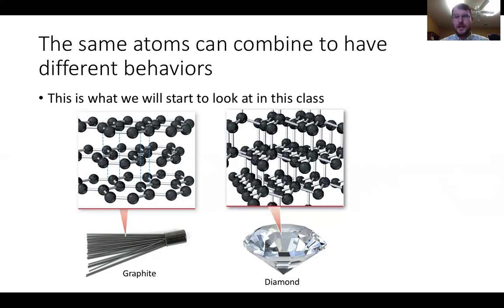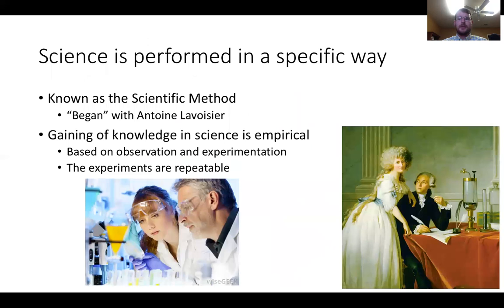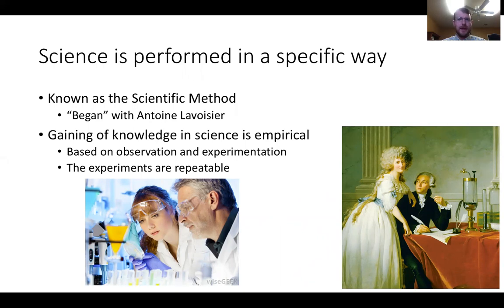Chemistry is a branch of science. Science is a big umbrella under which biology, chemistry, physics, math, and other subjects all fall. Science is performed in a very specific way — through the scientific method, a step-by-step procedure. The idea of doing experiments, gathering data, and testing hypotheses began with Antoine Lavoisier, who is really the father of the scientific method.